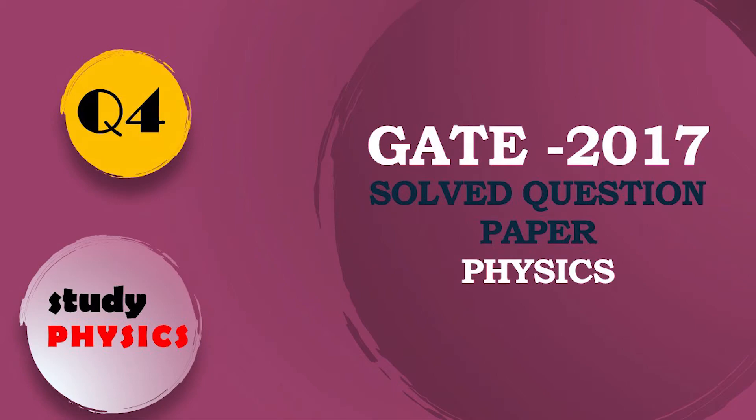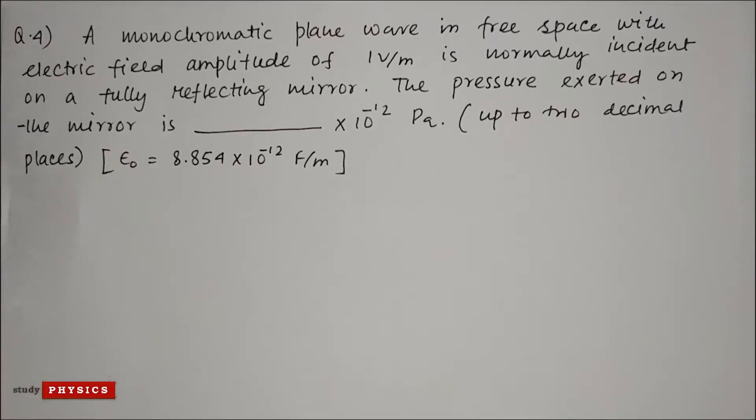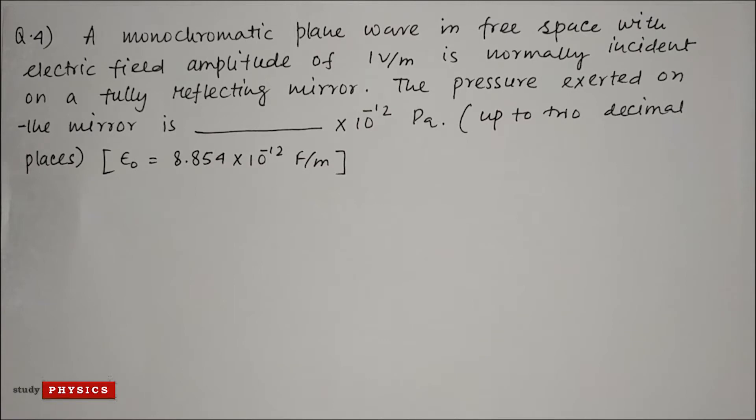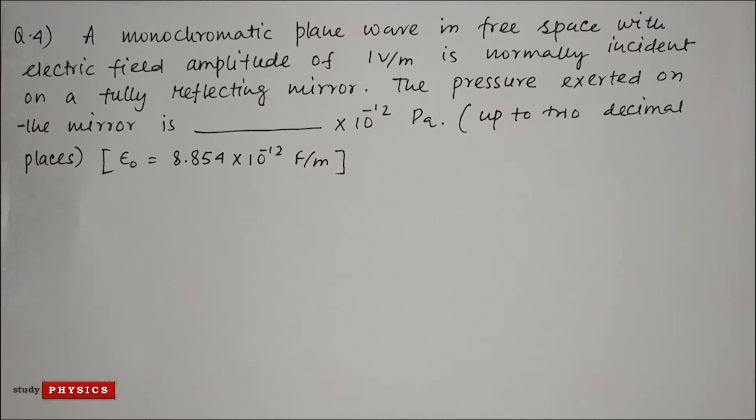Hi everyone, welcome to Study Physics. Here's question number four: A monochromatic plane wave in free space with electric field amplitude of one volt per meter is normally incident on a fully reflecting mirror. The pressure exerted on the mirror is...